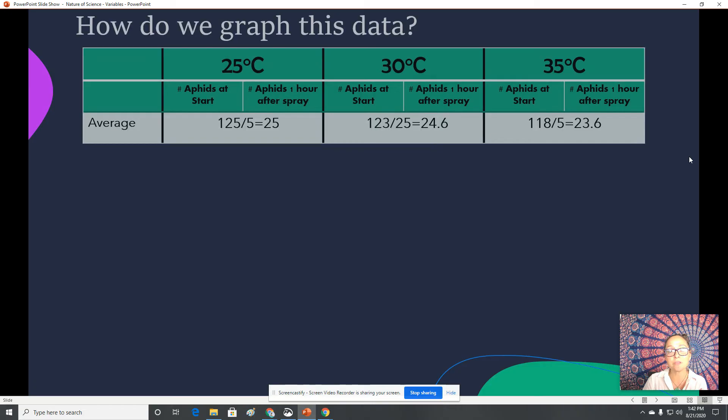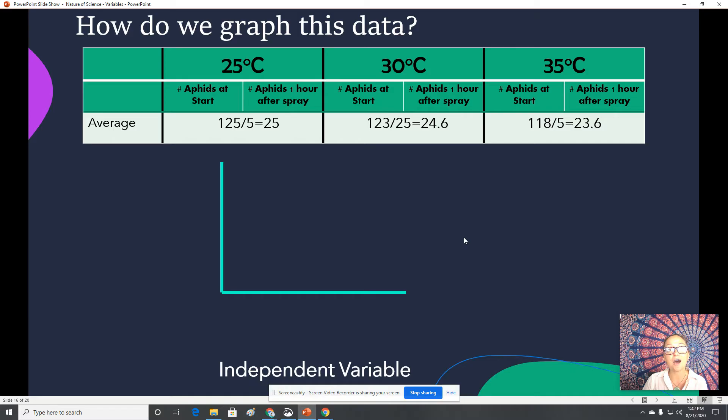So when we look at how do we graph this though? So we have some information here and we have some data. So we're going to set up our graph. And when we do this, we're going to place the independent variable on the x-axis. So in our experiment here, what was the independent variable? Good. It was temperature. So we're going to put our three different temperature groups on the x-axis. Now the dependent variable is what goes on the y-axis. So what is the dependent variable here? It's the number of aphids remaining at the end of one hour.